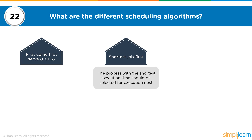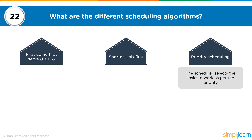The second scheduling algorithm is Shortest Job First — the process with the shortest execution time is calculated and selected first for the CPU. Then there is Priority Scheduling, where the scheduler selects tasks based on priority. Tasks are marked high, normal, or low priority, and all processes are classified accordingly.